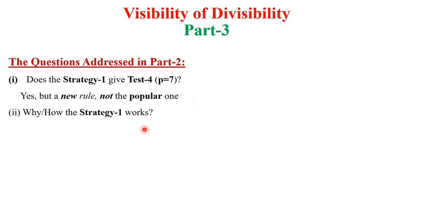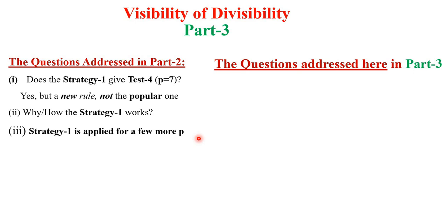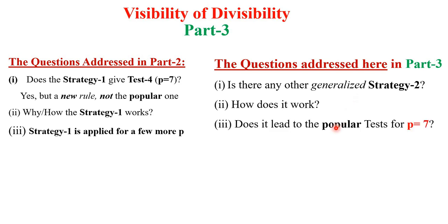And we discussed also what is the mathematical rationale behind strategy 1. And does strategy 1 apply for any general prime? Well, the questions remain unanswered after part 2 to be addressed here in part 3 today. And these questions can be framed like, is there any other general strategy, you can call strategy 2, particularly because and how does it work?